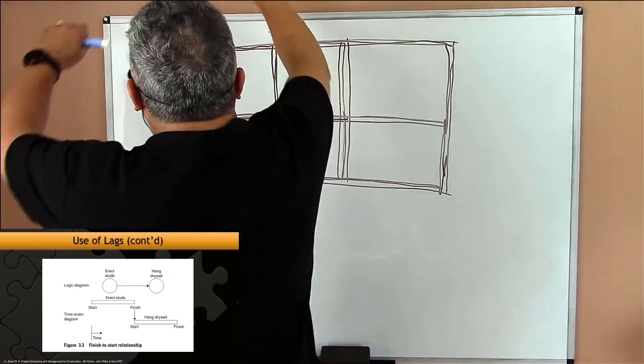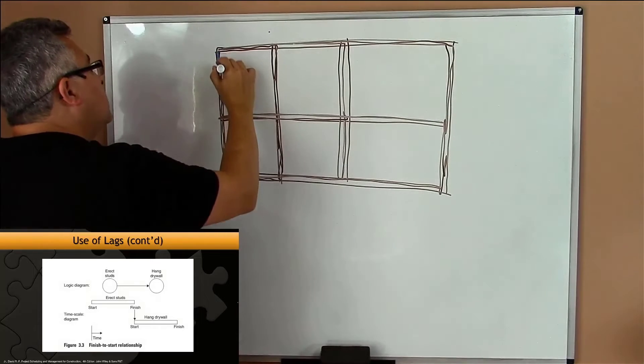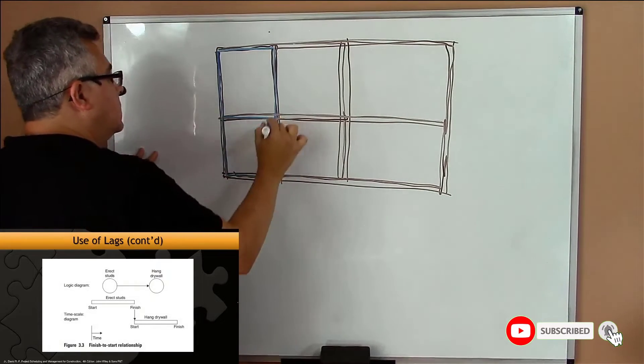And then you come with a drywall - that piece is like a flat panel that you put on top, sometimes bigger than this.